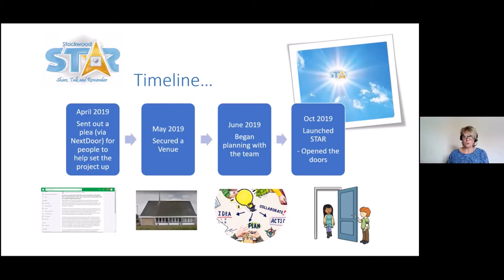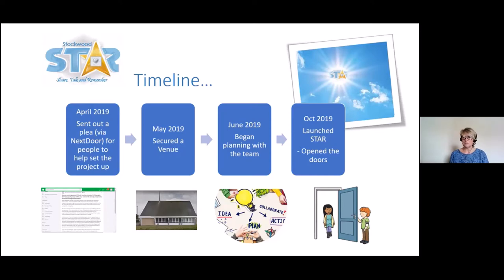The timeline of the Stockwood Star: in April 2019 I sent out a plea using an application called Nextdoor. It's a free social media application — not like Facebook at all — but you're able to sign up to it. It's international. You put your postcode in and you can see who is registered on Nextdoor. You can look at a map and see which houses are connected on Nextdoor. Once you're on there, you can post and share information about different things going on in your community.